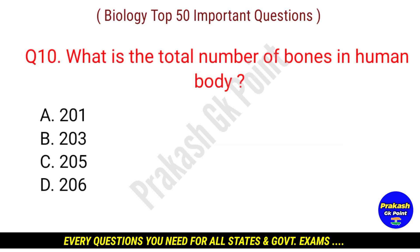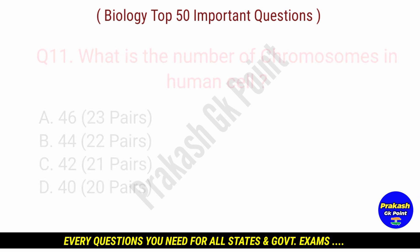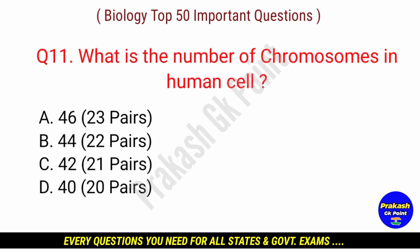Next question: what is the total number of bones in the human body? Answer: option D — 206.